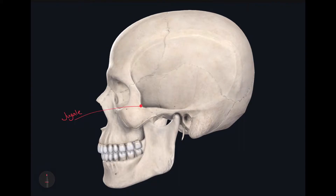The next craniometric point is called the maxillofrontale, and it's located where the frontal maxillary suture and the frontal process of the maxilla meet — so right here. And again this is called the maxillofrontale.